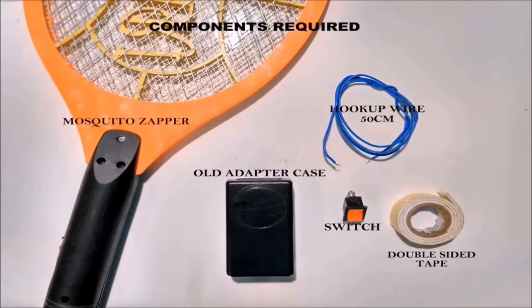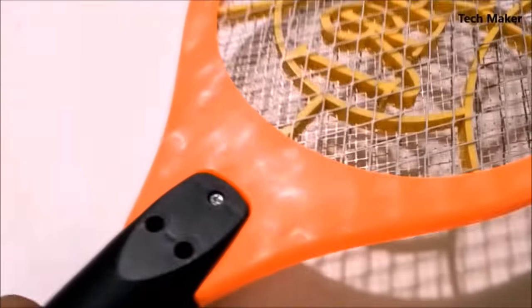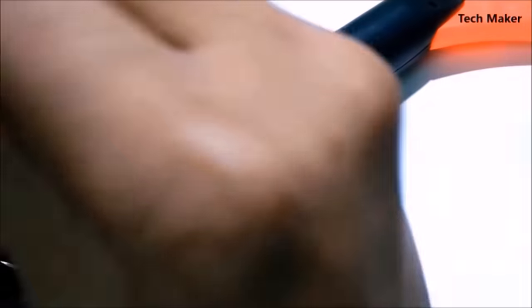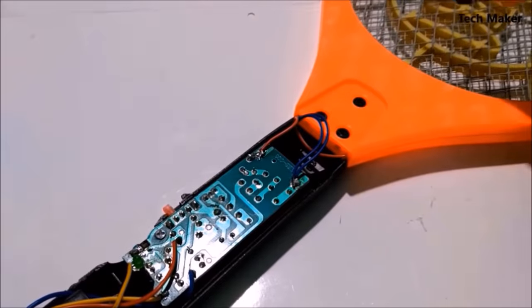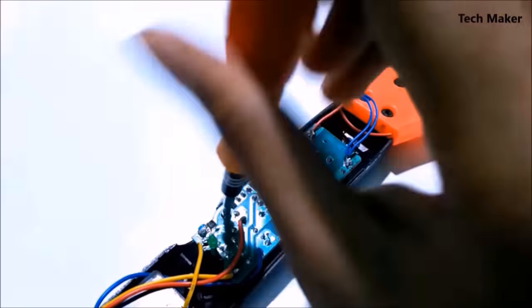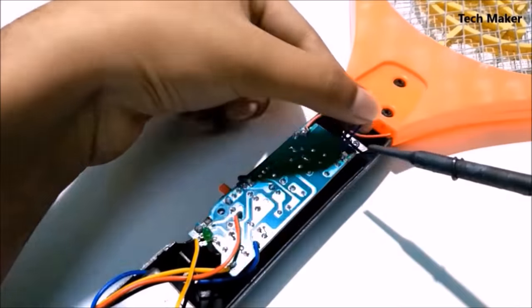These are the components required. This is a schematic. Now remove the screws of the mosquito zapper and then remove the case. Discharge the storage charge, remove the screw of the circuit, and desolder the wires of the zapper.